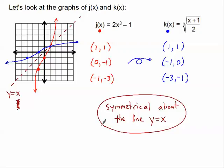So if you're looking at the graphs of two inverses graphically, you know they will be symmetric around y equals x. If they're going to intersect, they have to intersect at a place where the x and y coordinates are exactly the same — that's why (1,1) is on both j of x and k of x. Both of these are functions: the vertical line test on the red j of x hits only one point at a time, and the vertical line test on the blue k of x also only crosses one point at a time.